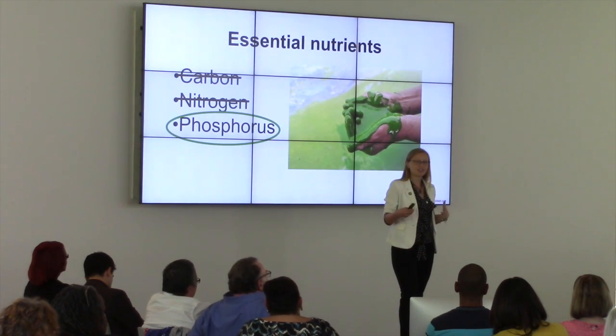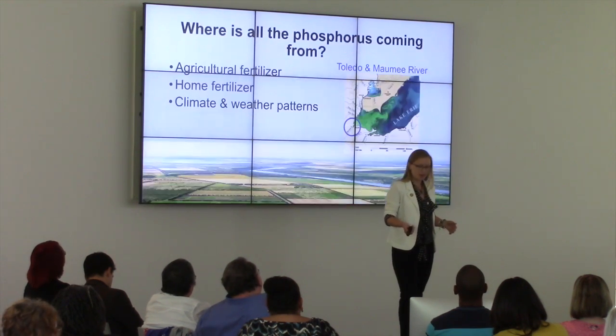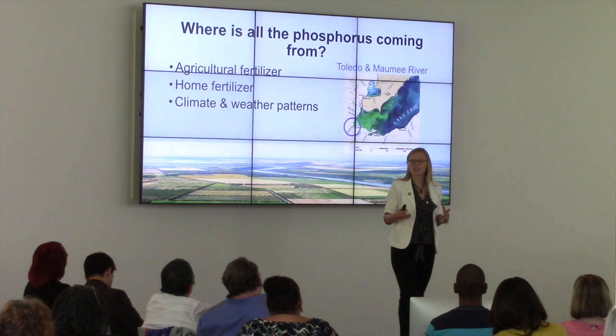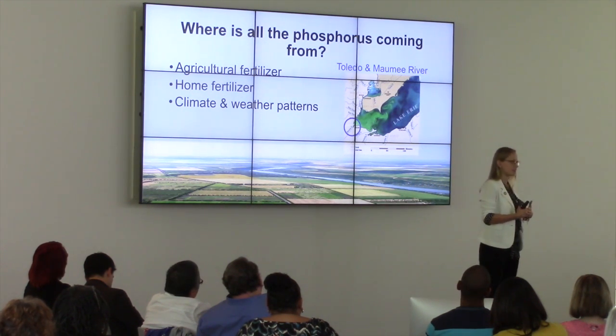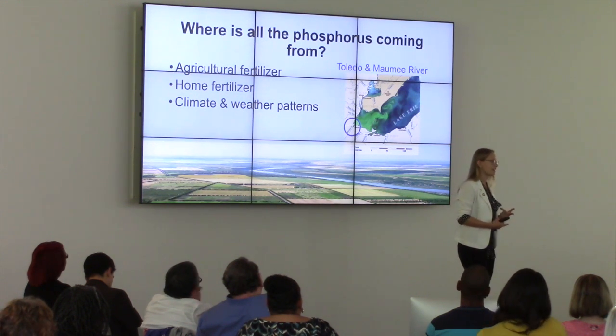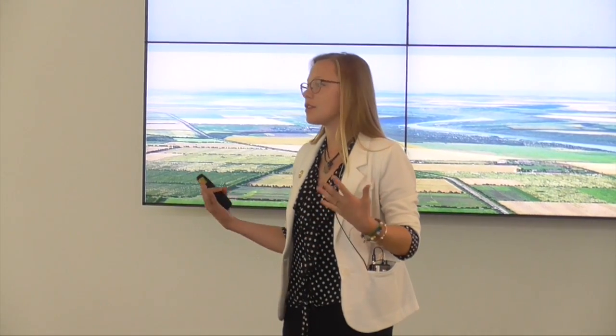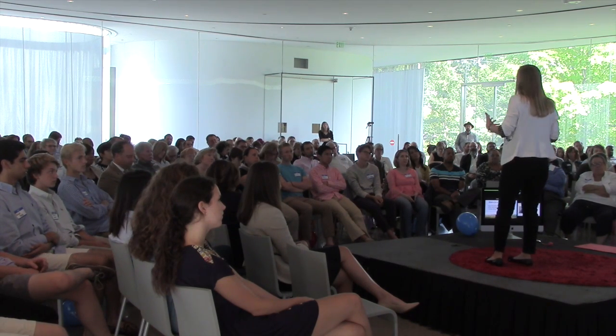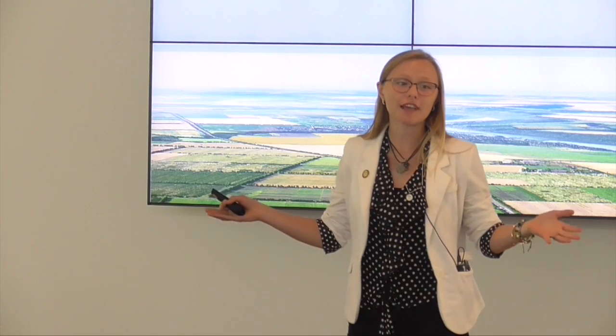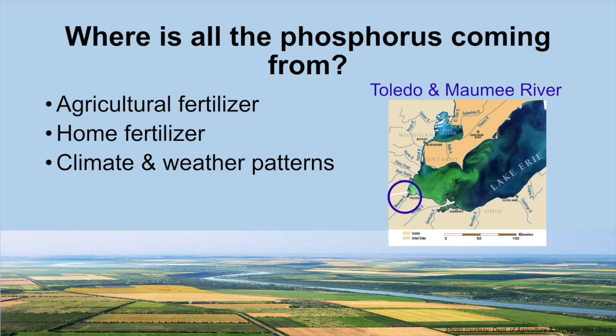Where exactly is this huge problem coming from? I want to be careful because it's not just one person, one party, one group of people contributing to this issue. Phosphorus is found in a lot of different products — we used to have it in our detergents, now we have it in agriculture. Agricultural fertilizer usually contains phosphorus and nitrogen. Farmers have large fields and put phosphorus-containing fertilizer on them. You can also have it in home fertilizers. These combinations, together with climate and weather, can cause a problem.